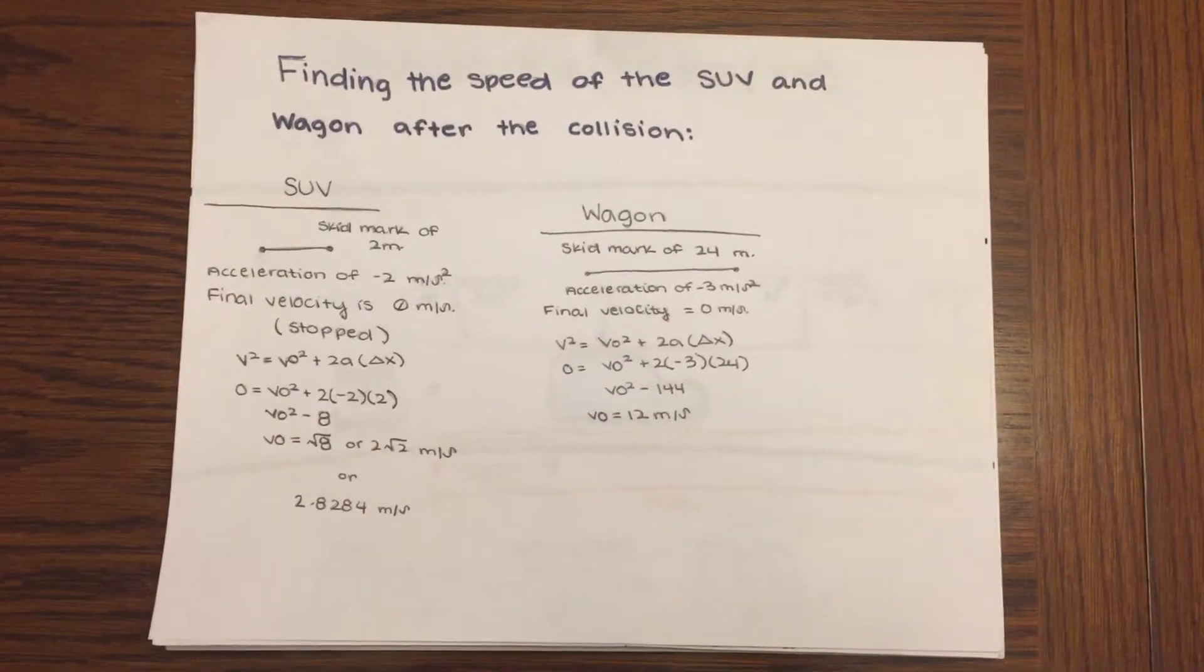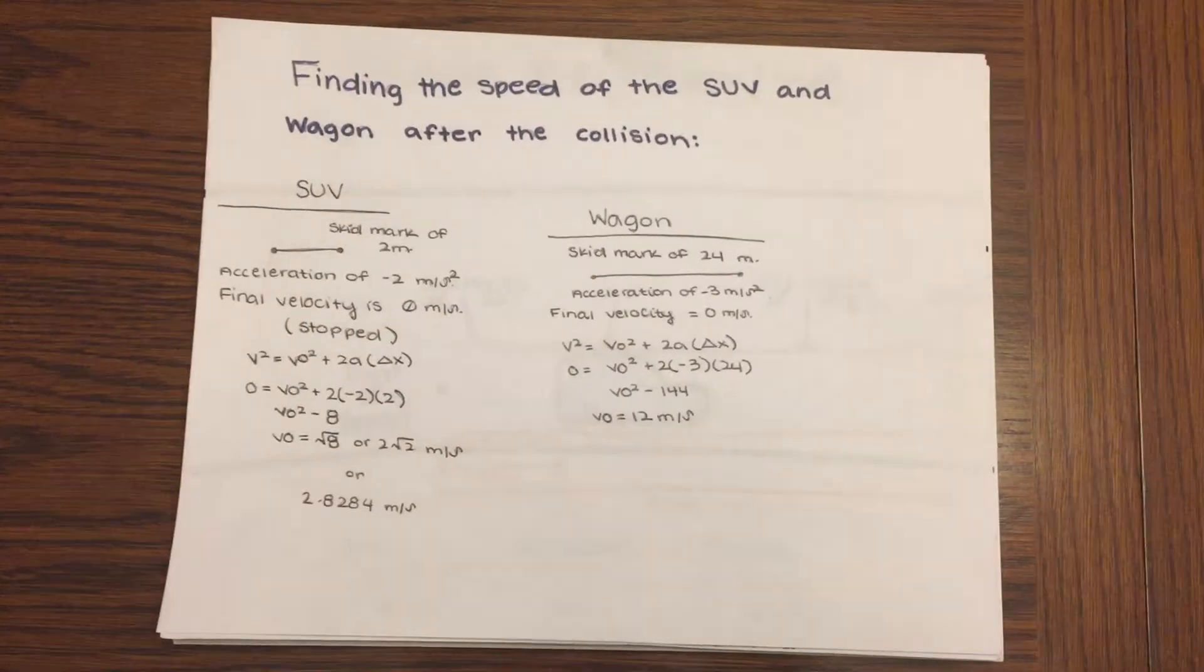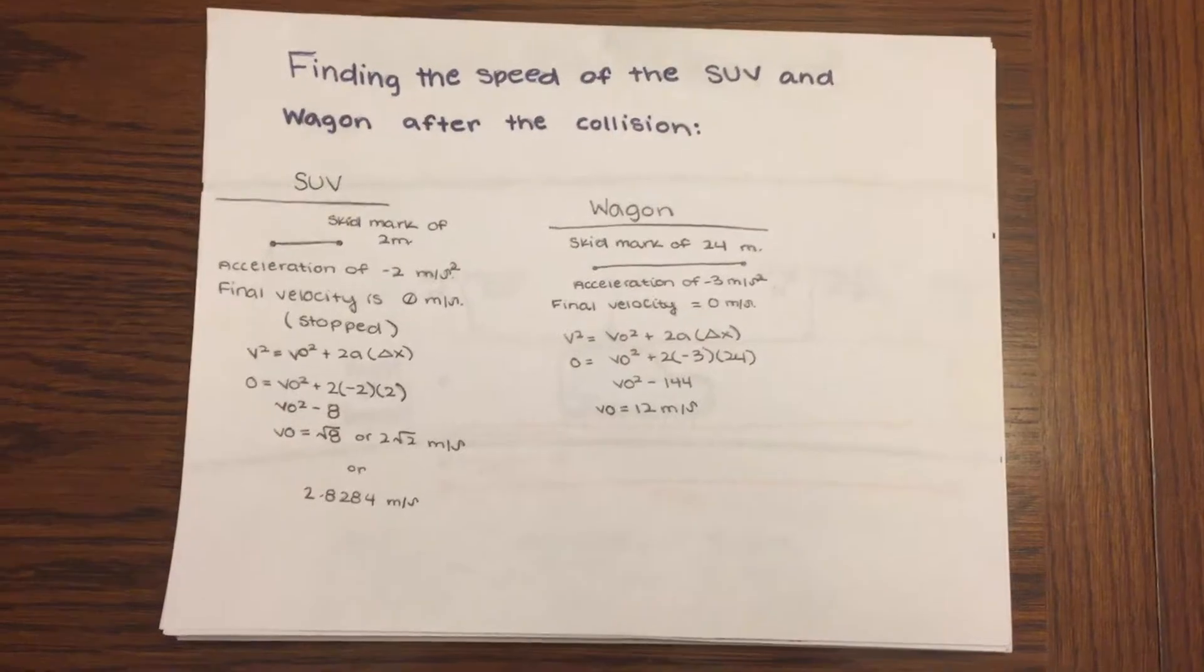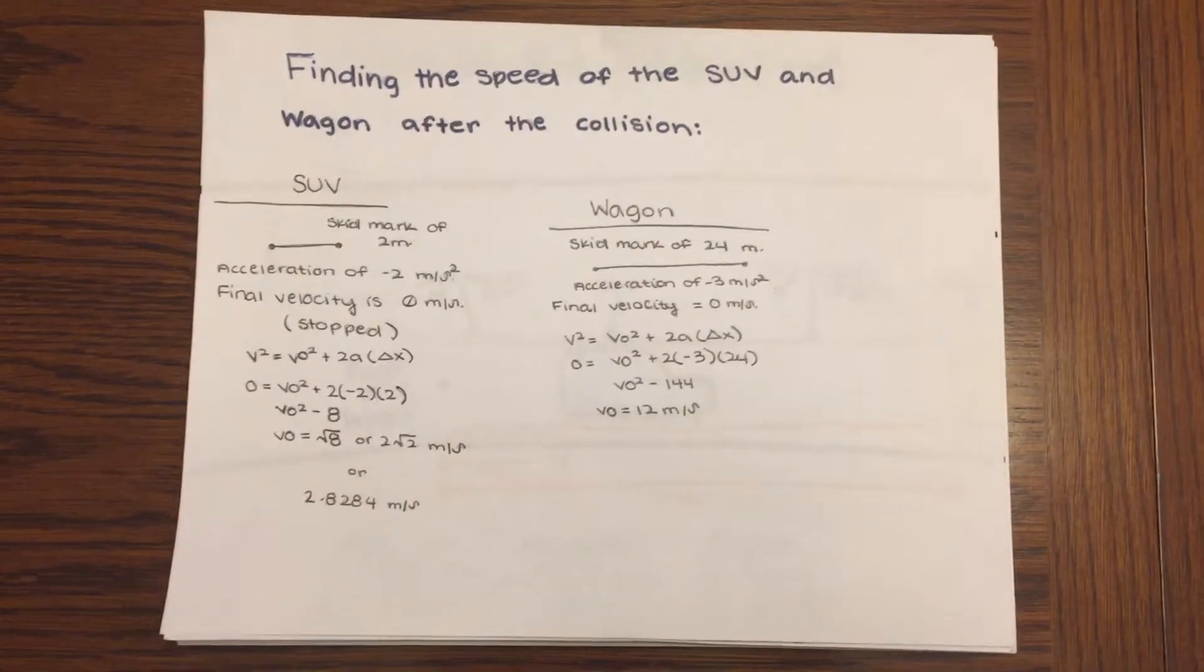To calculate the speeds of the SUV and wagon, we worked backwards first, using the acceleration of brakes, the distance of skid marks, and the final velocity of a stopped car. We calculated the speeds of the two cars after the collision.